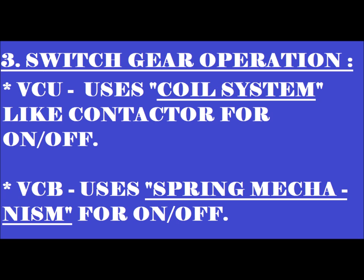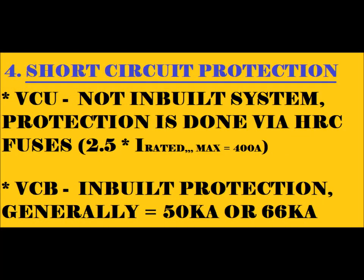The last point is short circuit protection. In VCU, there is no built-in system to handle short circuit current, so to protect the panel and motor from damage, an HRC fuse is used. The HRC fuse rating is set at 2.5 times the rated current, with a maximum of 400A. In the case of VCB, built-in protection handles the short circuit current, and its breaking rating is generally 50kA or 66kA.